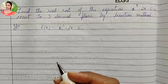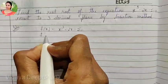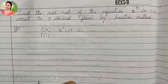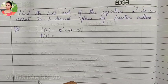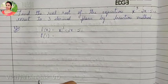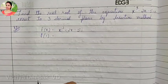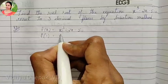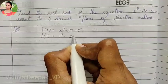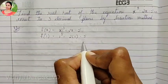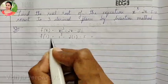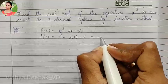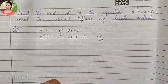The first step is the trial and error method. You should use trial and error to find between which values the root of the equation lies. We check f of 1: it is 1 cube minus 2 into 1 minus 5, which is 1 minus 2 minus 5, giving us minus 6.